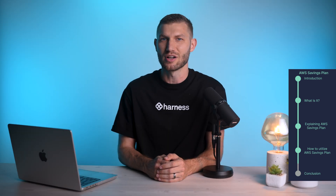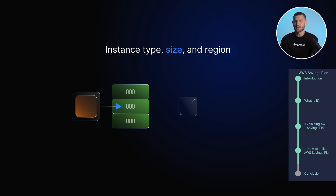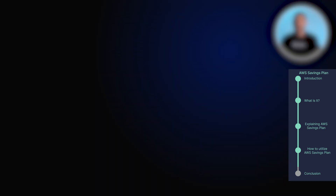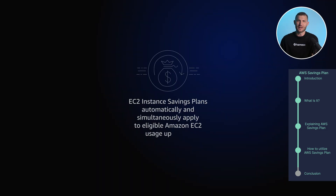Reserved instances, however, require a commitment to a specific instance type, size, and region for a fixed term of one or three years. While this might seem restrictive, it offers deeper discounts compared to savings plans, and is perfect for workloads with steady and predictable usage patterns. With savings plans, discounts are automatically applied to eligible usage, whereas reserved instances require manual assignment of instances to the reservation, which can be more complex and time-consuming, especially when managing a large number of instances.